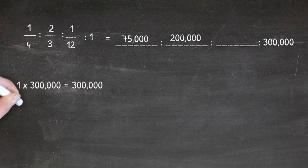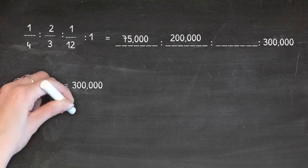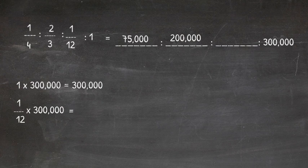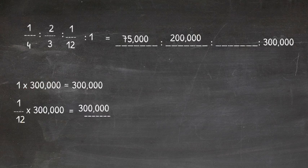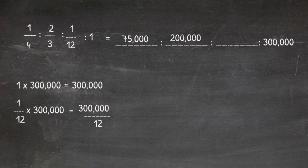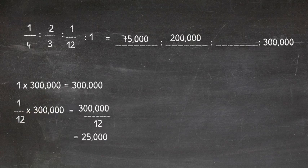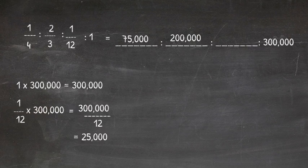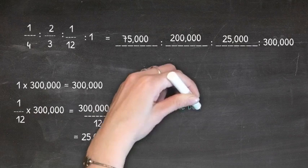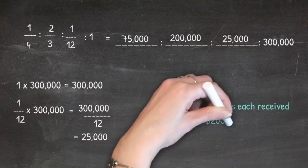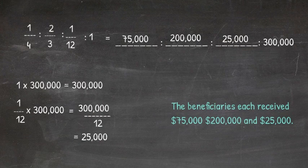Finally, one-twelfth times 300,000. One times 300,000 is 300,000, twelve times the one of the whole number gives us 12. So 300,000 over 12, or when we divide, 25,000. This means the beneficiaries received $75,000, $200,000, and $25,000, respectively.